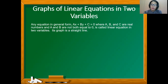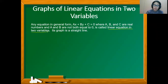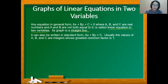An equation in general form, Ax plus By plus C equals 0, where A, B, and C are real numbers and A and B are not both equal to 0, is called a linear equation in two variables. The graph of that linear equation is a straight line. It can also be written in standard form, Ax plus By equals C, where usually the values of A, B, and C are integers whose greatest common factor is 1.